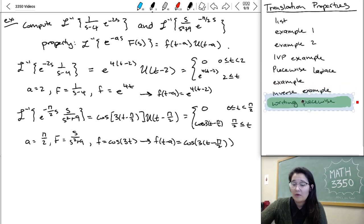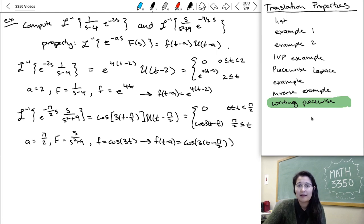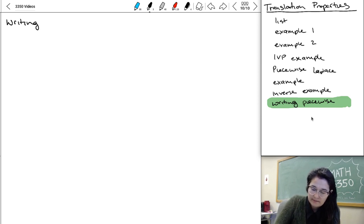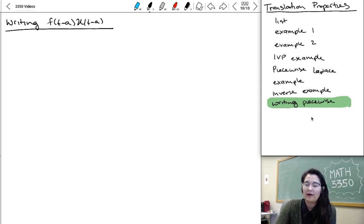So one last thing I wanna do is talk about how we represent piecewise functions using U, because it's something that people find pretty difficult in this section. So if you're still writing, go ahead and hit pause, sit with the example, make sure it makes sense. And then I need to switch slides. And I wanna talk about representing F of T minus A, U of T minus A.